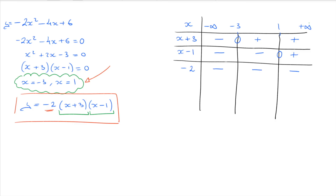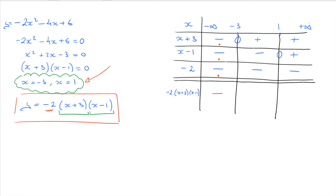We add a double line to the sign table to indicate the final result, and look at the product of all signs for the function negative 2 times x plus 3 times x minus 1. For x between negative infinity and negative 3: negative times negative is positive, times negative gives negative. At negative 3: zero. Between negative 3 and 1: positive times negative is negative, times negative gives positive. At 1: zero. For x greater than 1: positive times positive is positive, times negative gives negative. We've created the sign table for this quadratic.